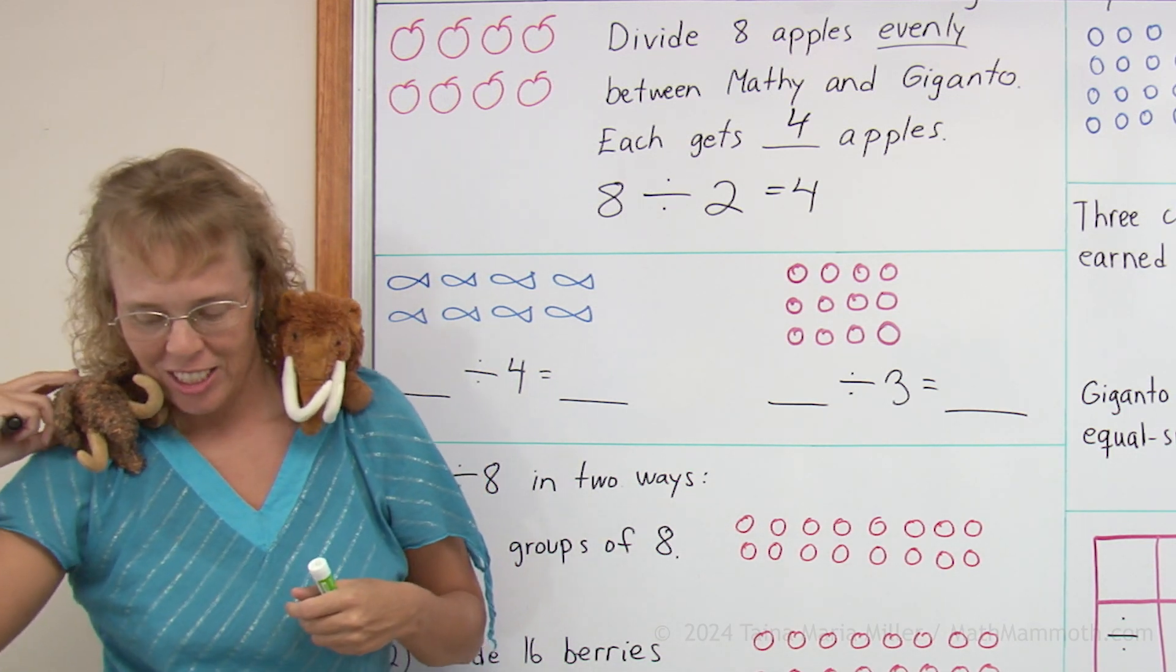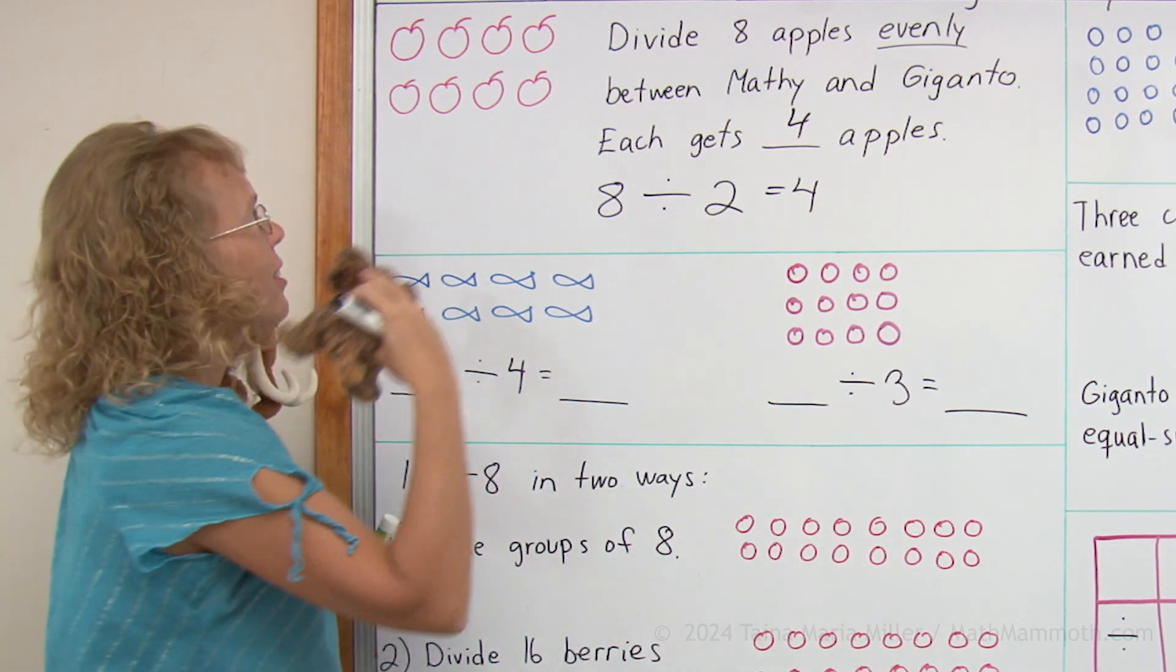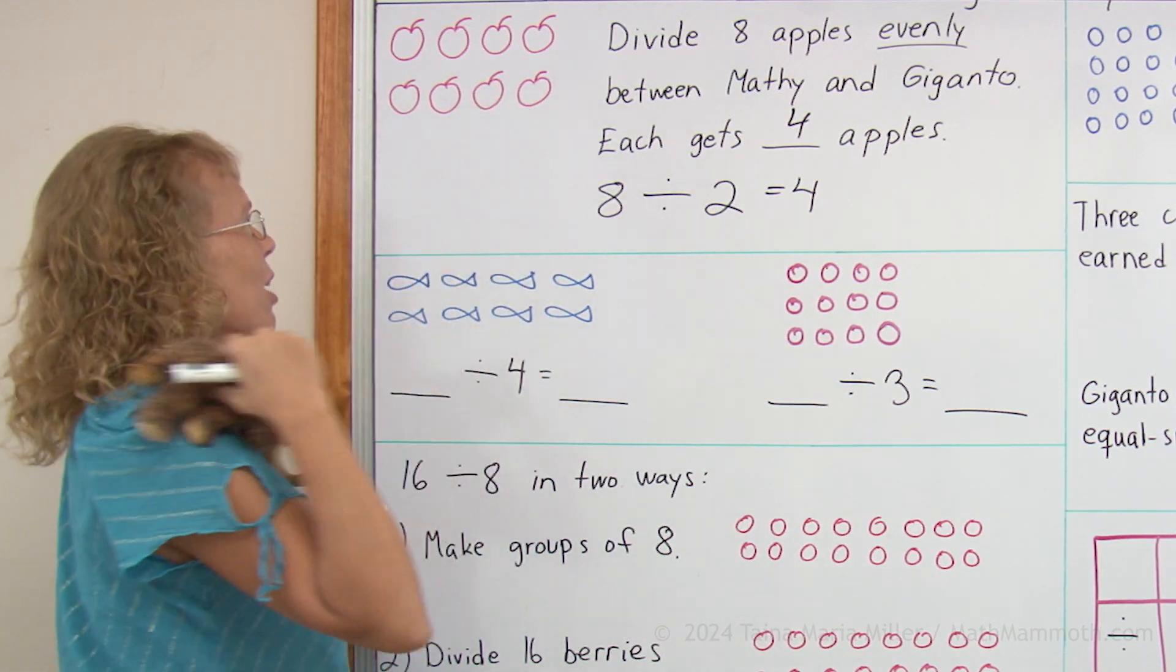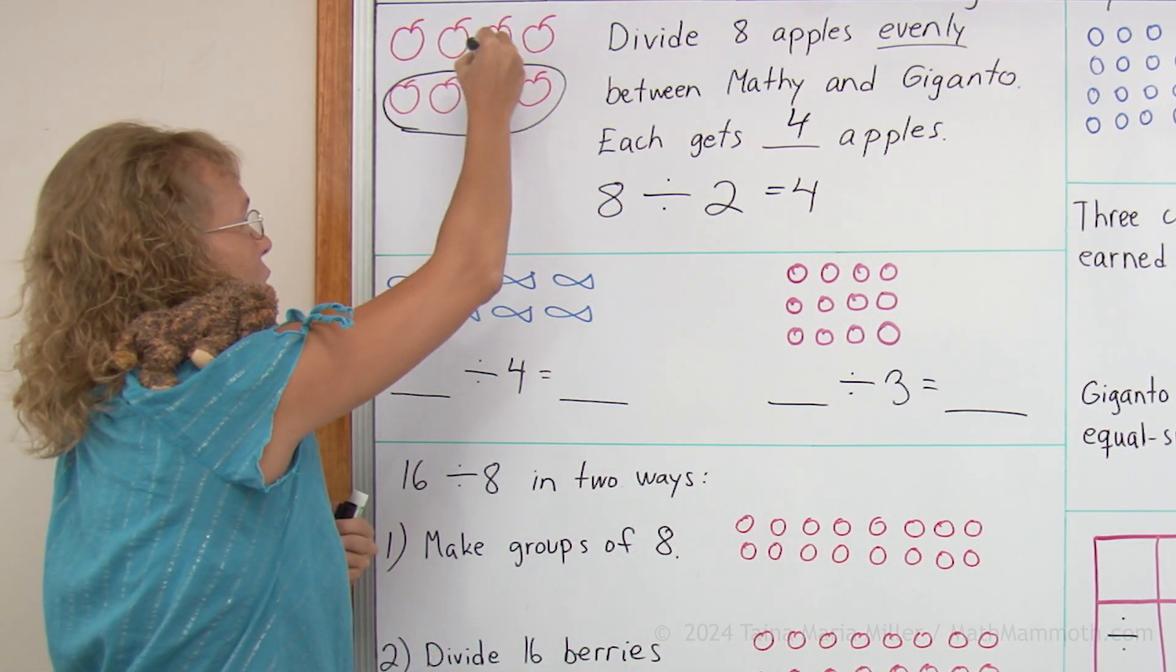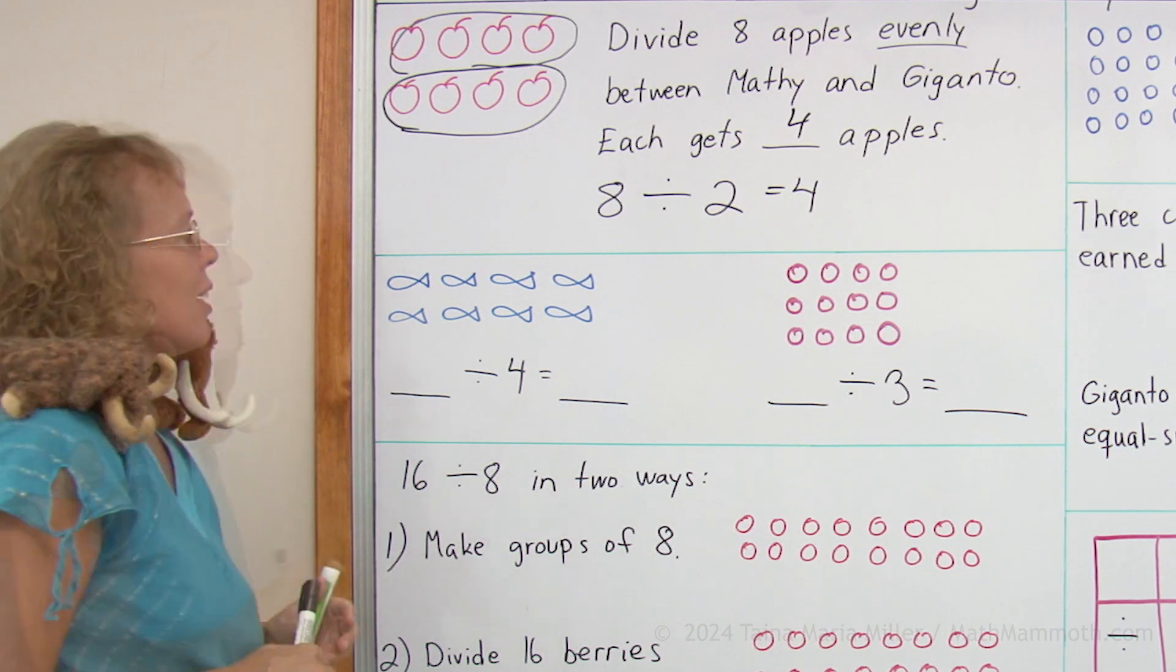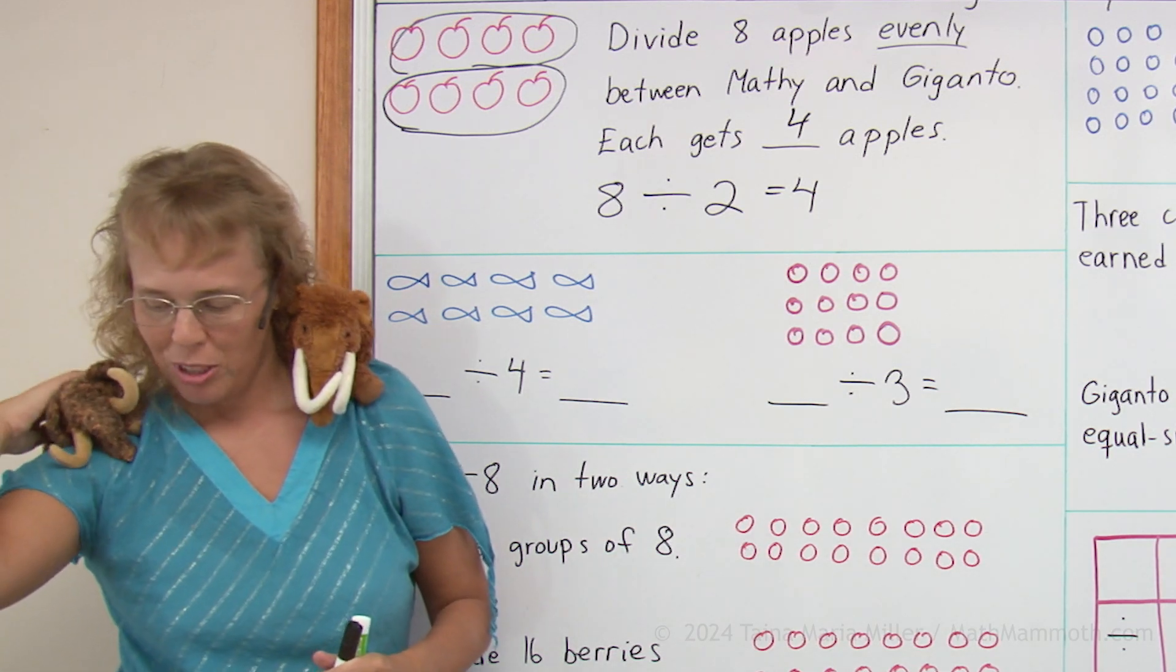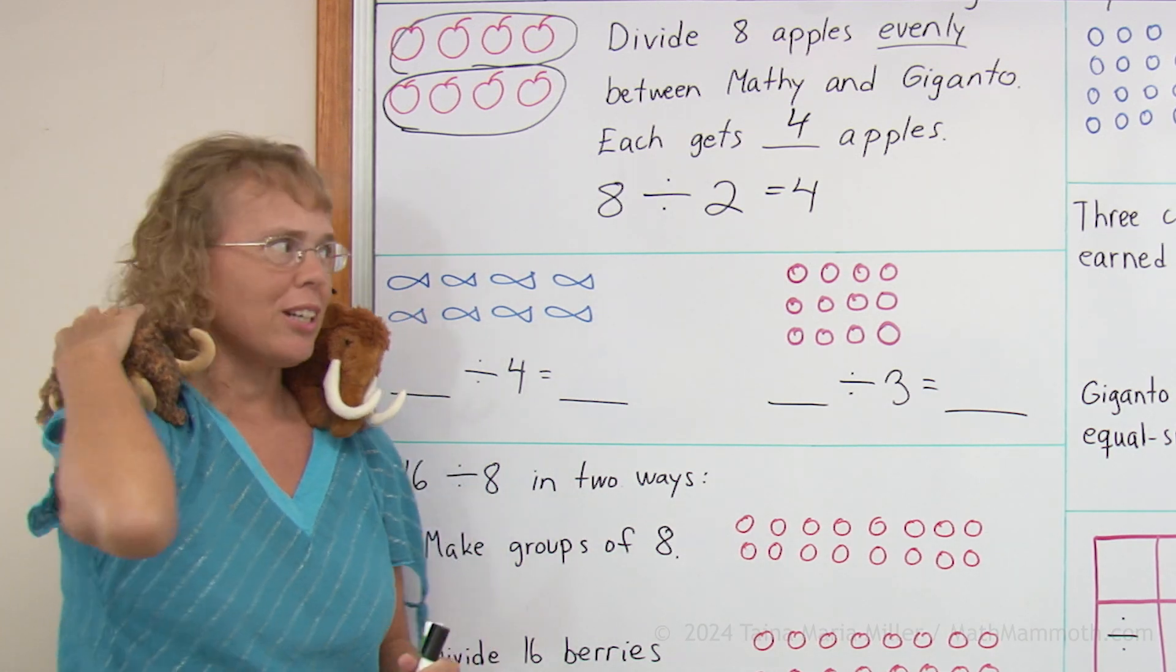Now Giganta, you can go get some apples. Let's make groups. Those are Giganta's apples and then those are Matthew's apples. And if you're a good boy and you stay on my shoulder you'll get to eat maybe some berries too.